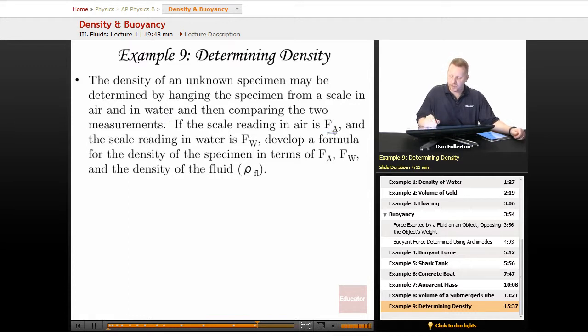If the scale reading in air we're going to call FA and the scale reading in water is FW, let's develop a formula for the density of the specimen in terms of the scale reading in air and in water and the density of the fluid.